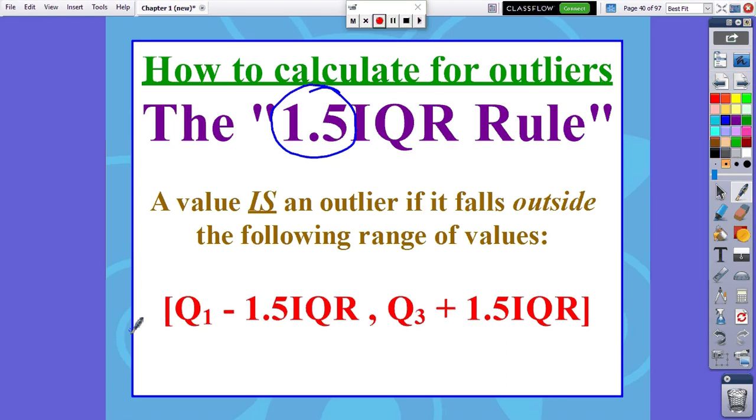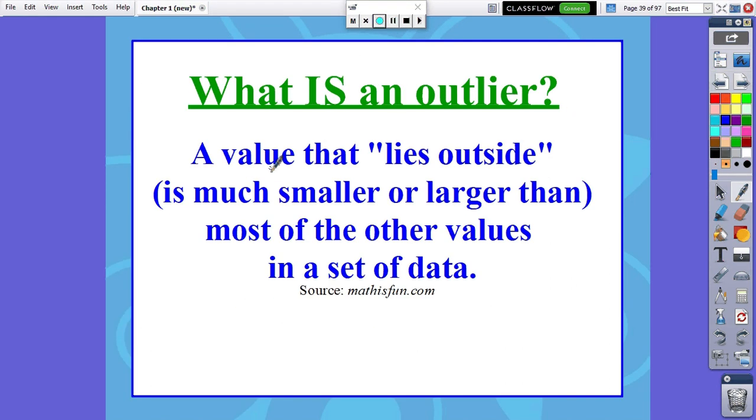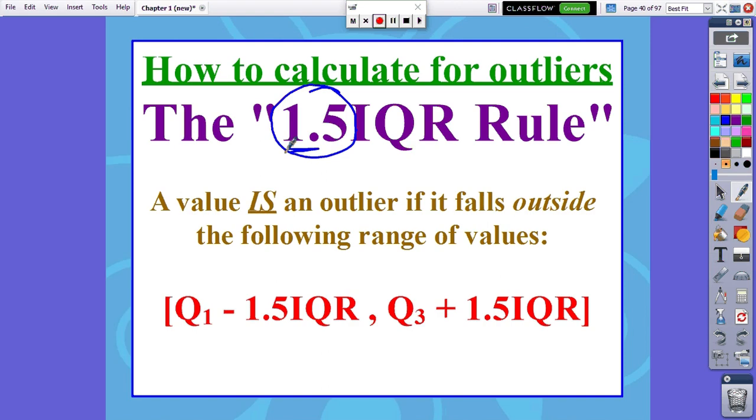But my bet is that some famous statistician many, many years ago decided that 1.5 IQRs above or below Q1 or Q3 really did a great job of determining if numbers were kind of outside of the set of the rest of the other numbers. We said an outlier is any value that lies outside, is much smaller or larger than most of the other values in a data set. And so this one guy just found 1.5 works. It's good enough.